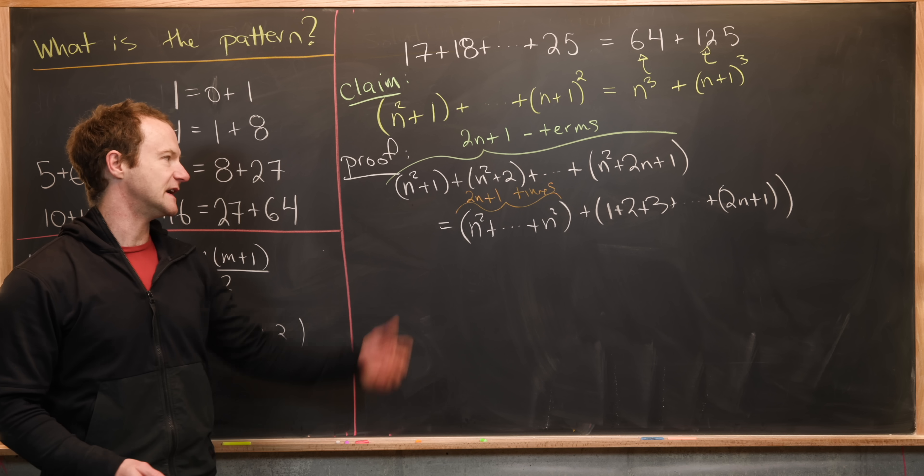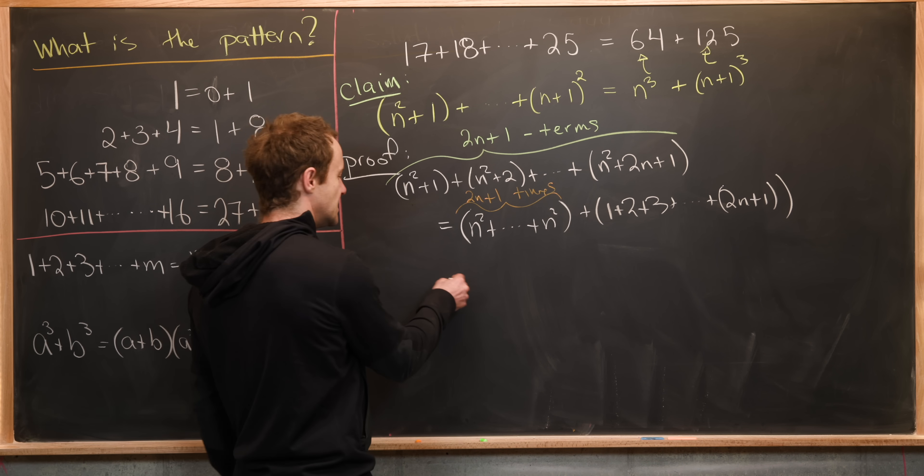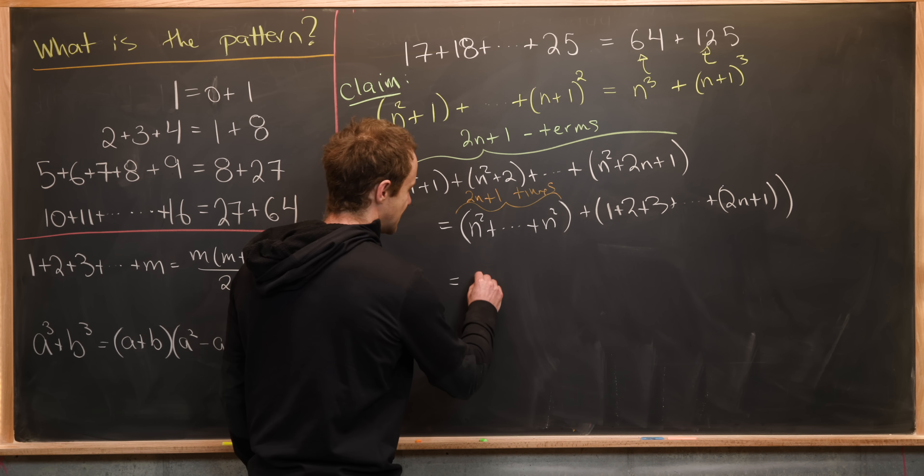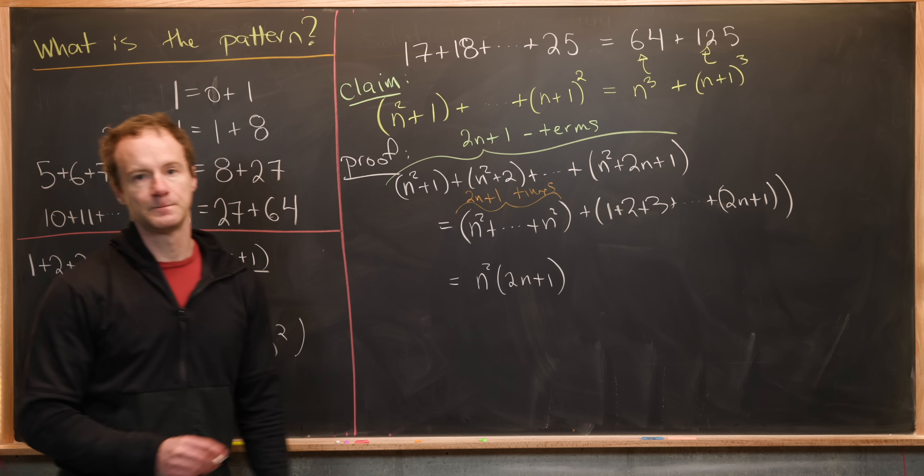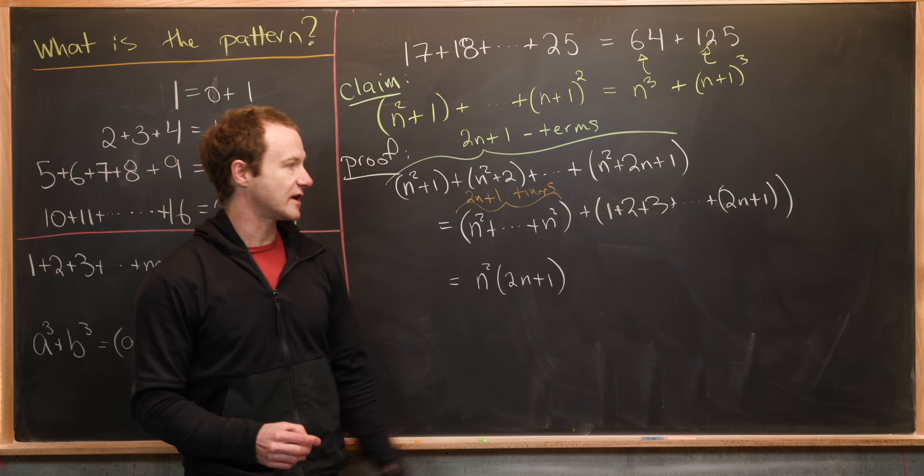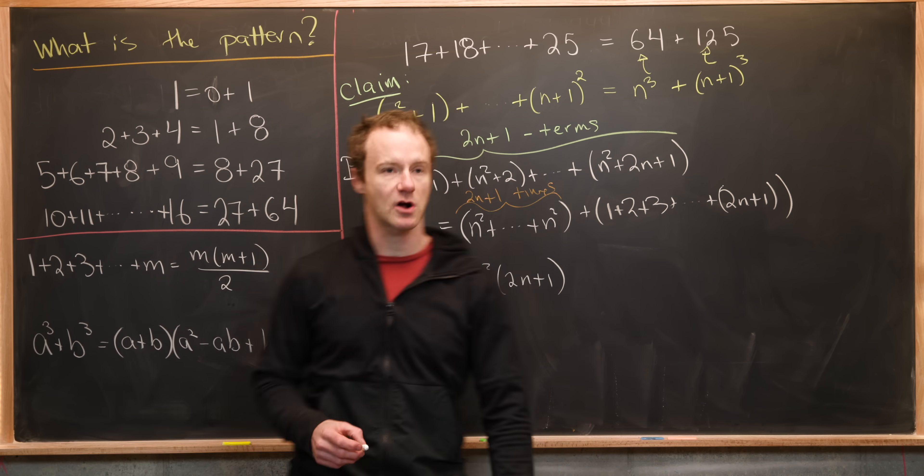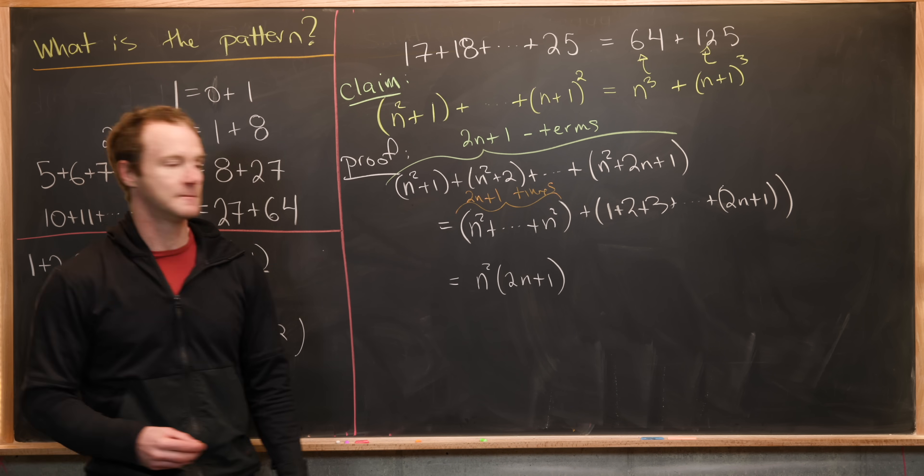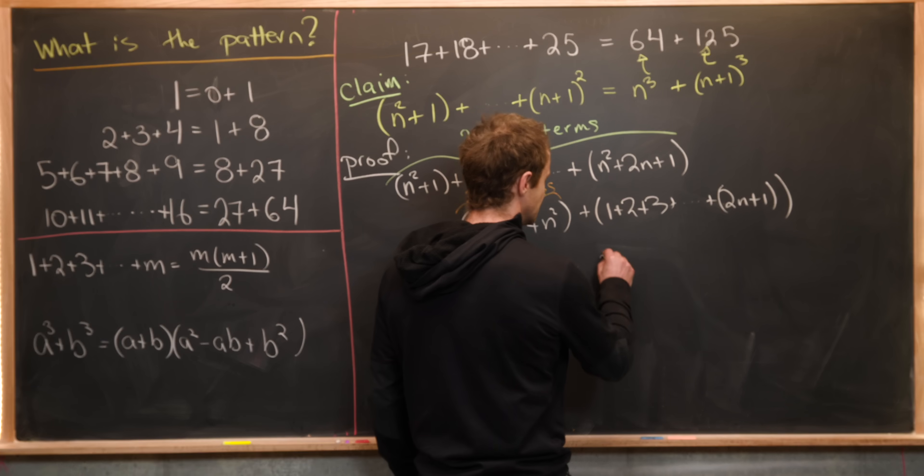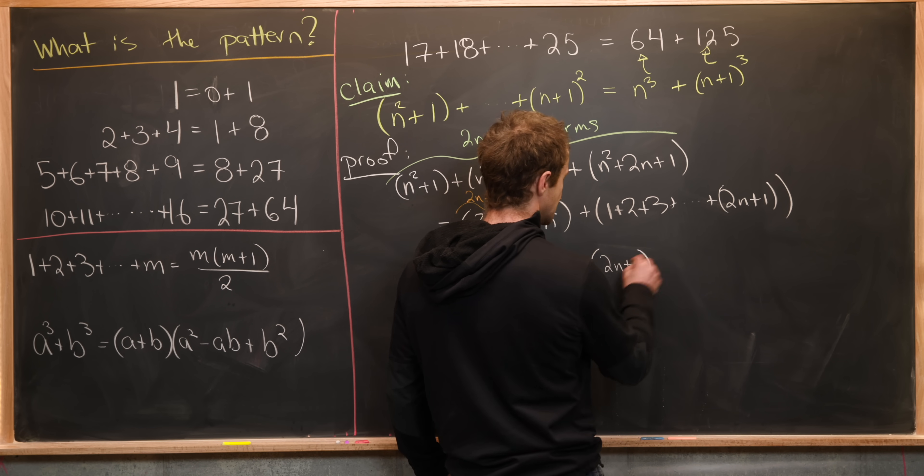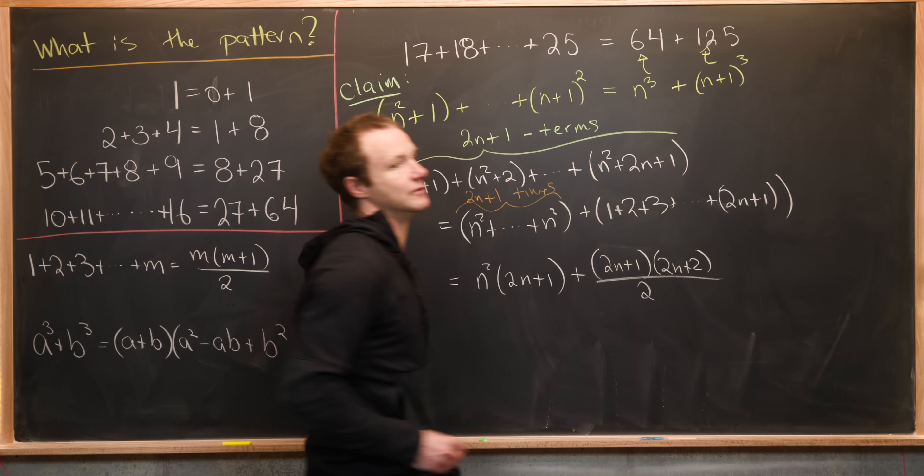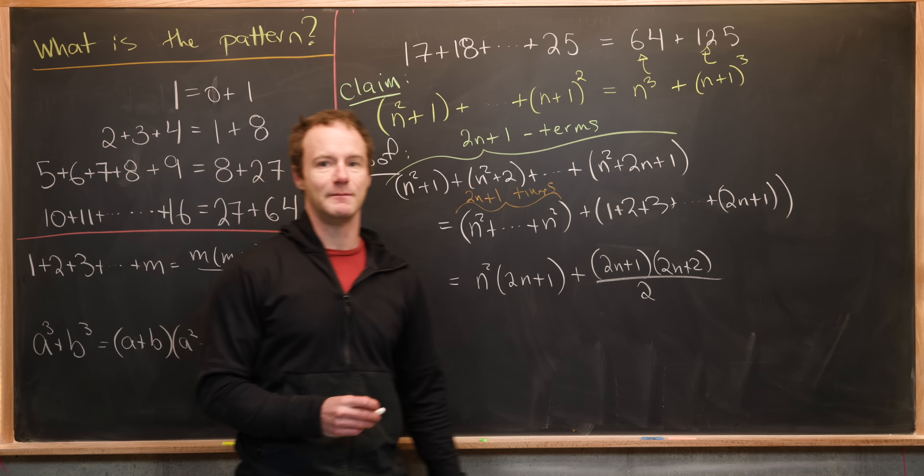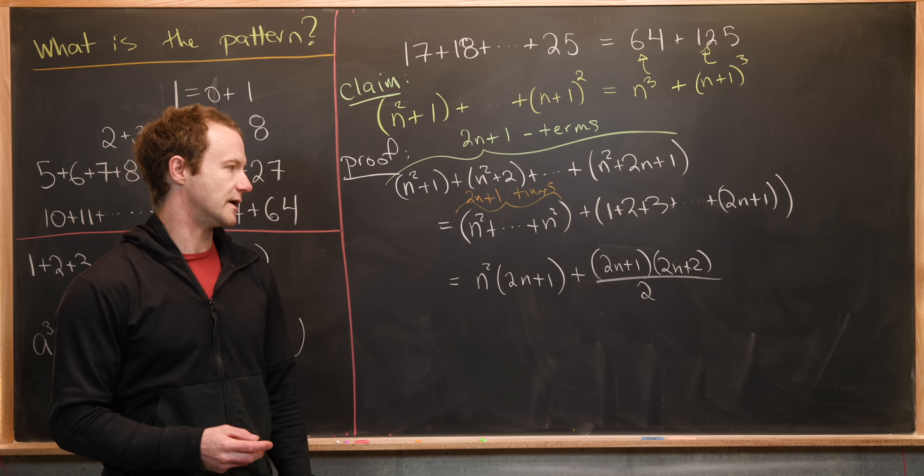Okay, well, repeated addition is just multiplication. So that means this guy right here is the same thing as n squared times two n plus one. And then we can use the triangular number formula over here that we recalled on this next bit. So that's going to be equal to two n plus one times two n plus two, all over two. So that's by this identity where m is two n plus one.